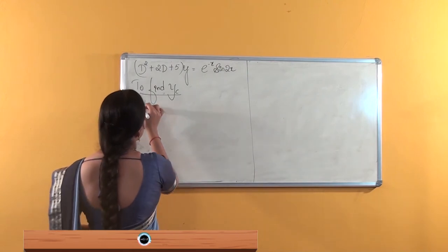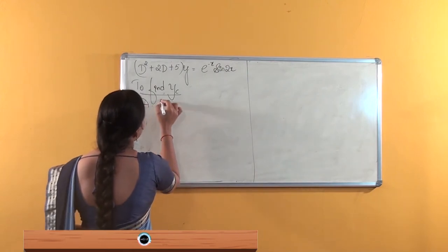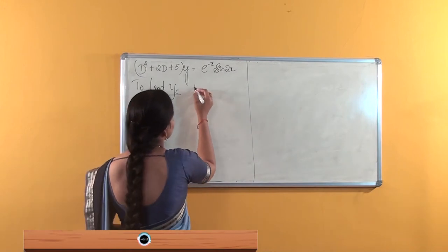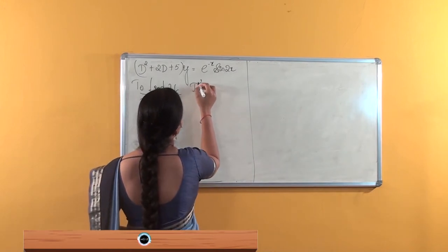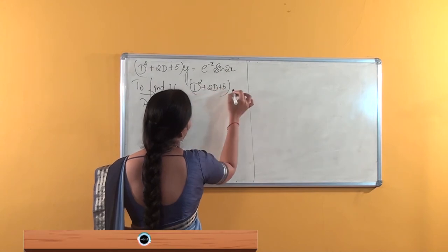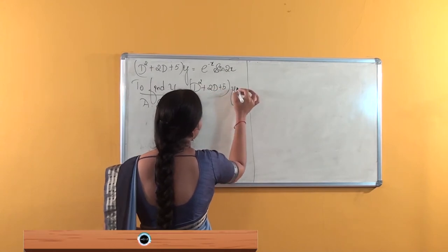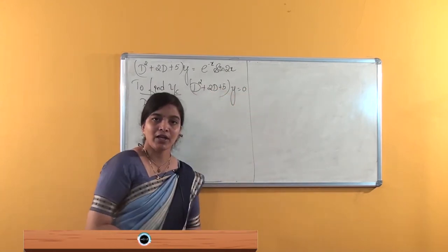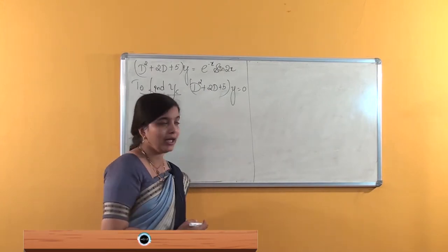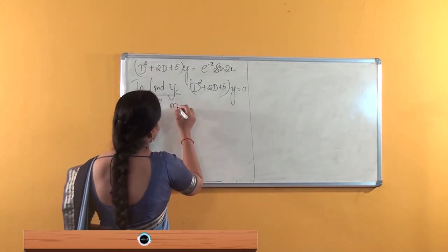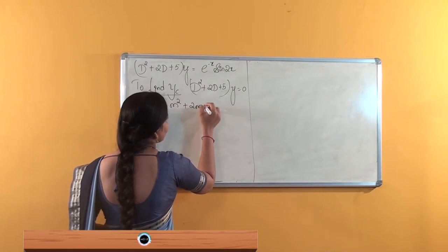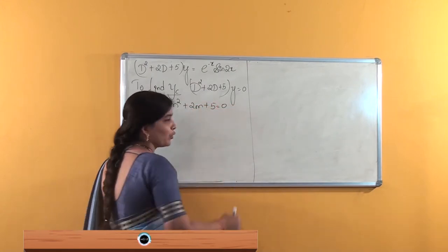For the complementary solution, what we do is we find the auxiliary equation. We consider this as (D² + 2D + 5)y = 0. The work is to write the auxiliary equation, that is m² + 2m + 5 = 0.